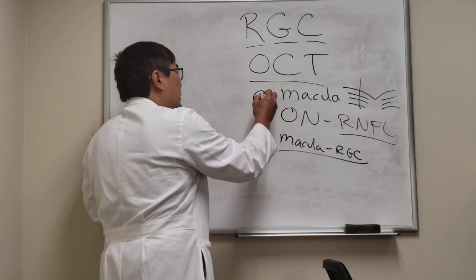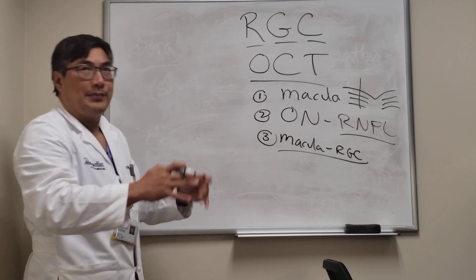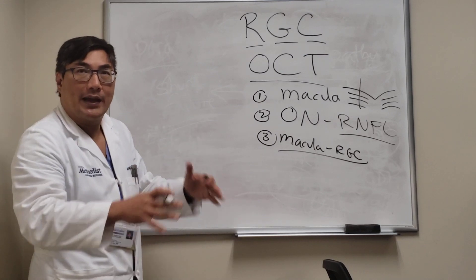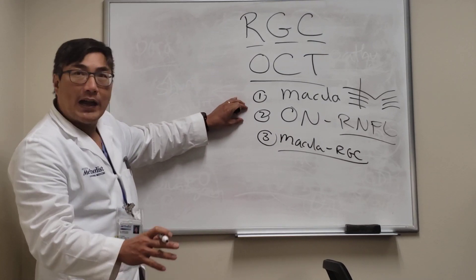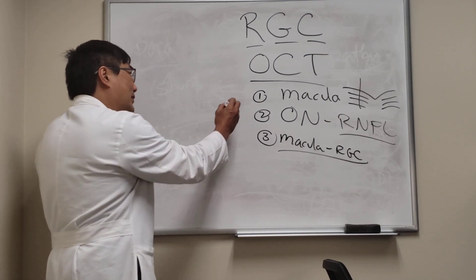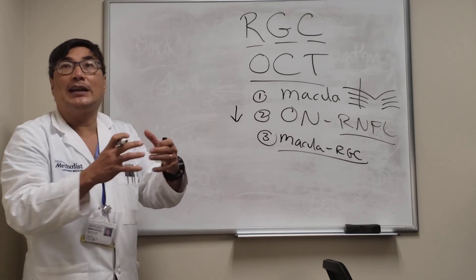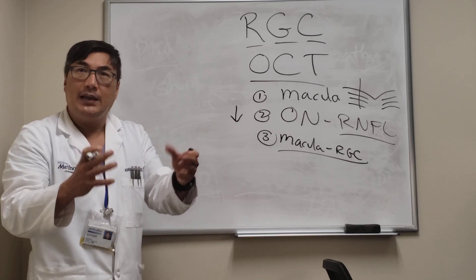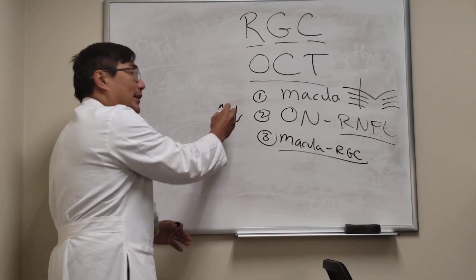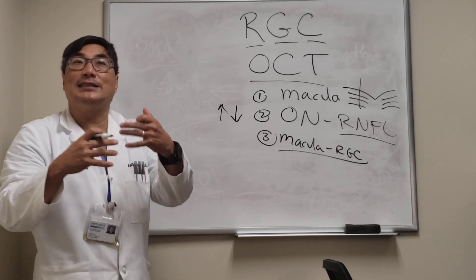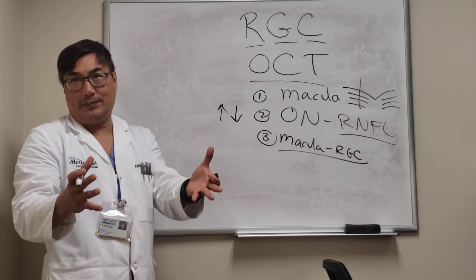The first thing you've got to do is talk to the patient and look at them. But after you've done that, if the nerve fiber layer is decreased, that's the correlate of optic atrophy. If the nerve fiber layer is increased, that's the correlate of optic disc edema, and especially papilledema.